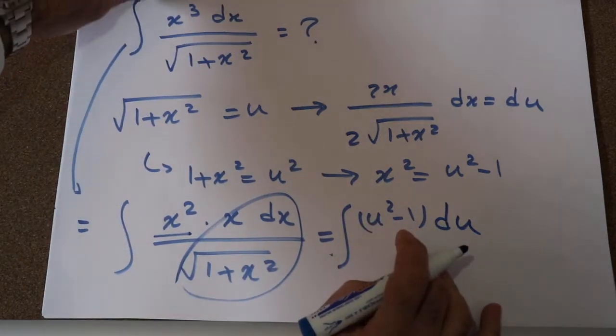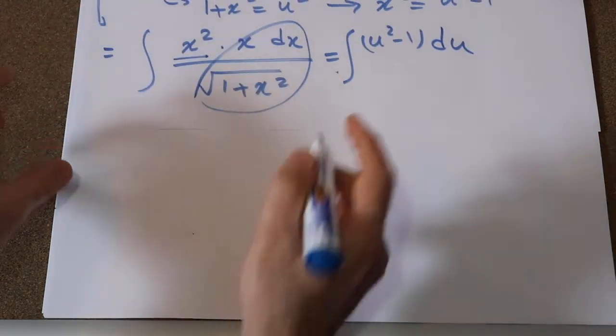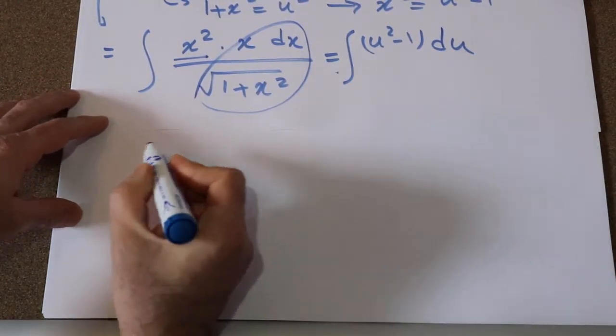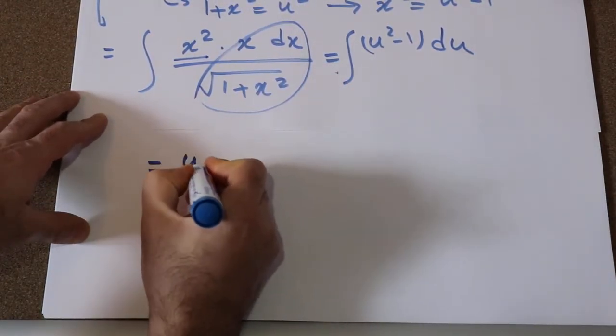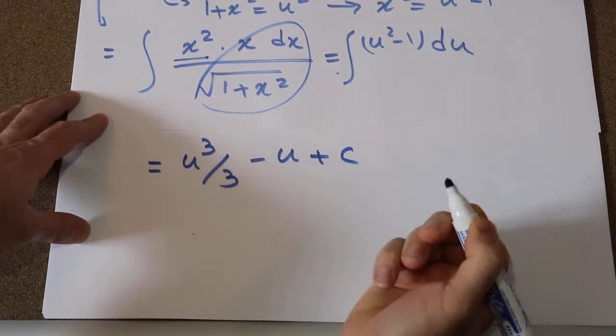So now this integral is relatively straightforward. That one will be equal to integral of u² minus 1 du will be equal to u³ divided by 3 minus u plus c, which is the constant of the integral.